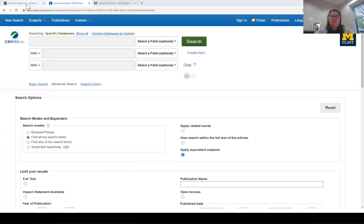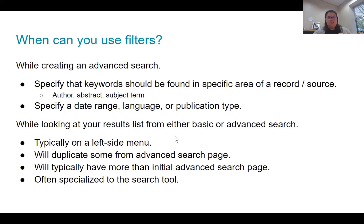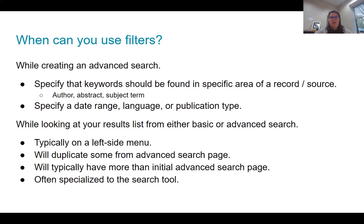The other time you can use filters is while looking at a results list — whether from a basic or advanced search. Filters are typically on the left side menu. Some filters duplicate things you could do on an advanced search page, such as limiting to journals or by date range, typically at the top. You'll also often have more filter options here than on the initial advanced search page, and they are again often specialized to a particular search tool.